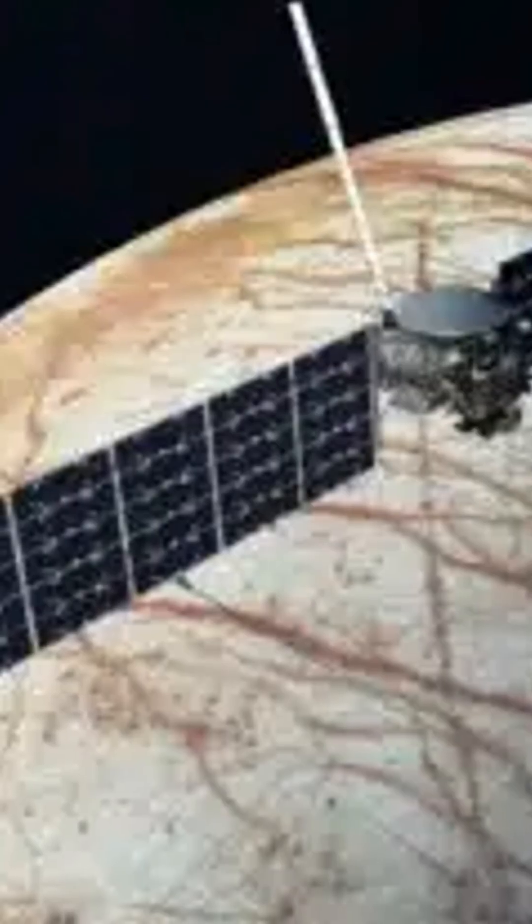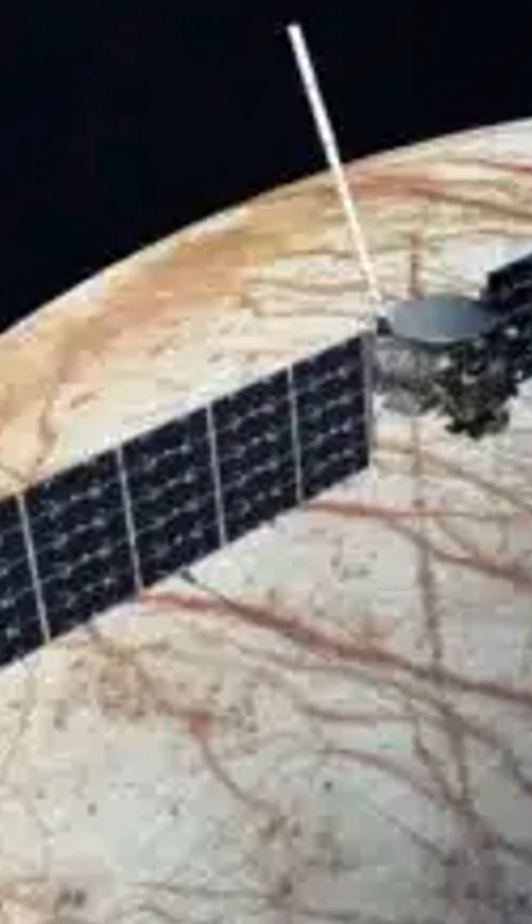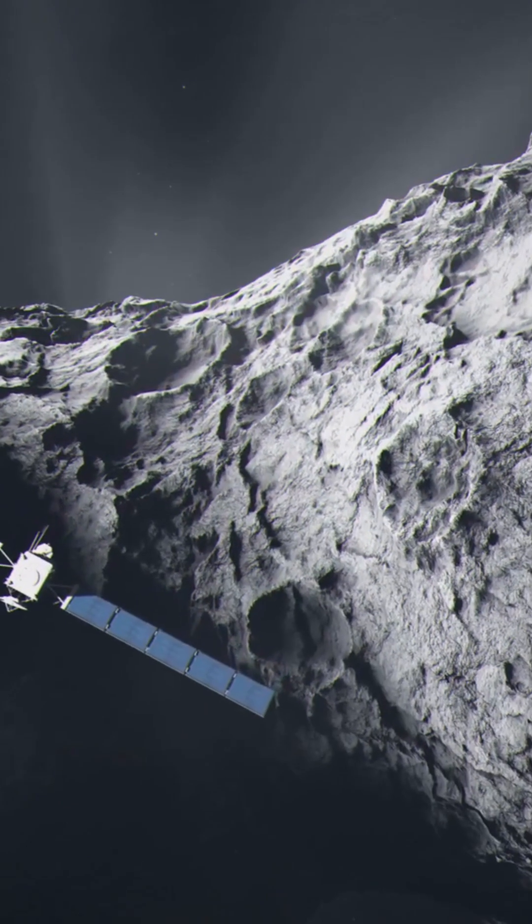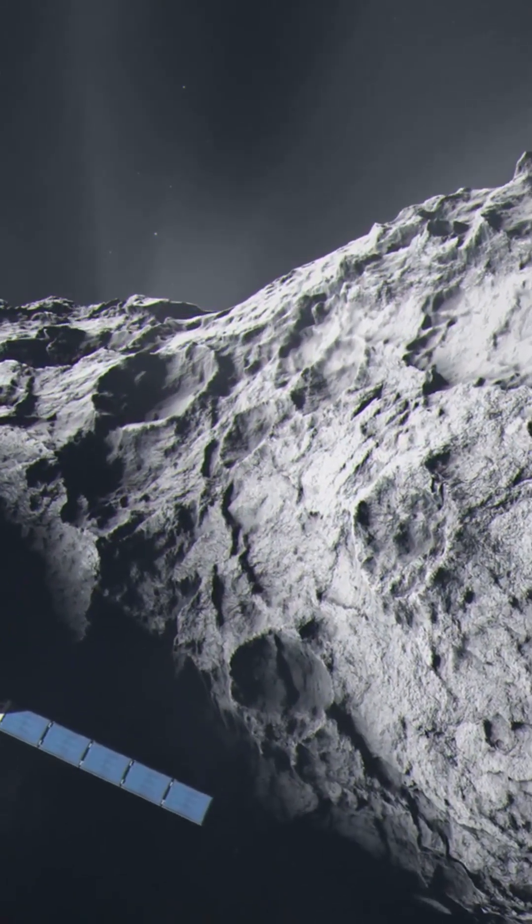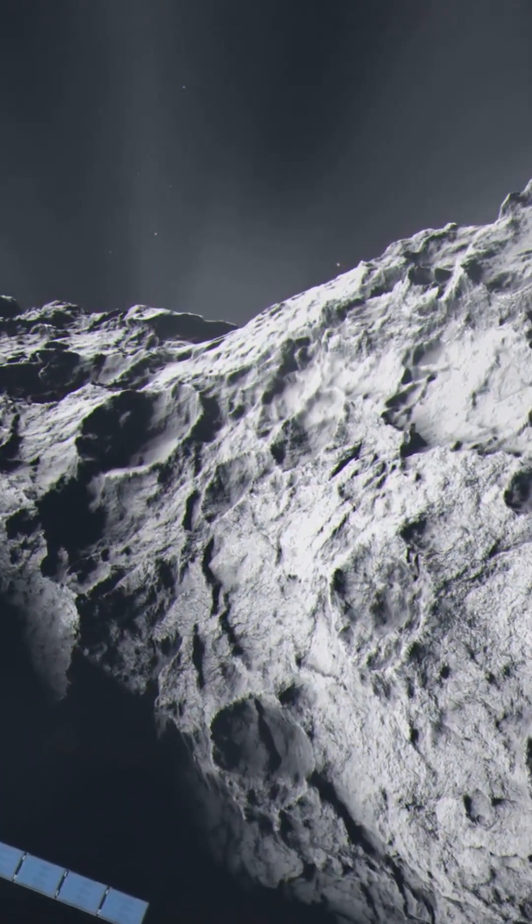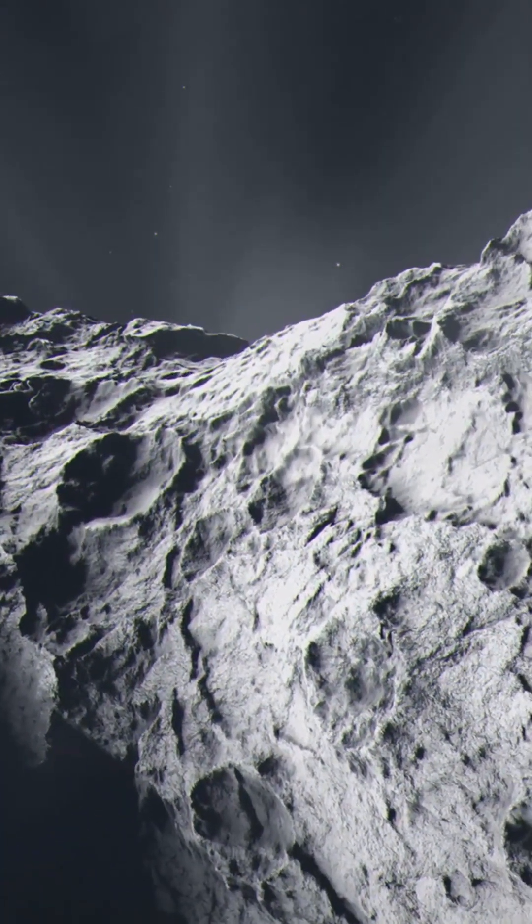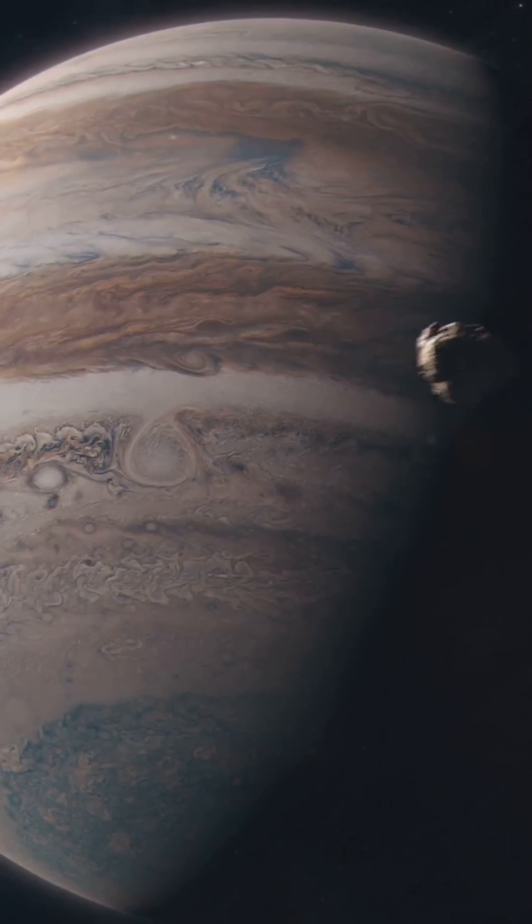But why does this matter? These interactions offer critical insights into planetary defense. By understanding how giant planets like Saturn influence the trajectories of comets and asteroids, scientists can better predict and mitigate potential threats to Earth.